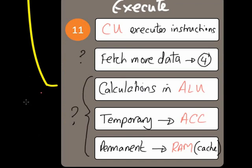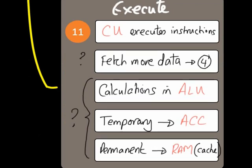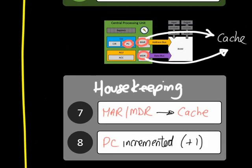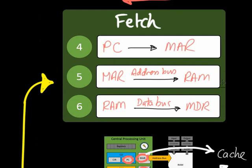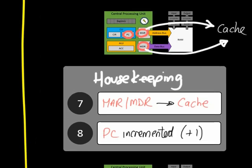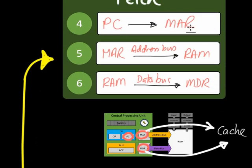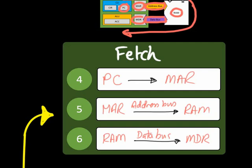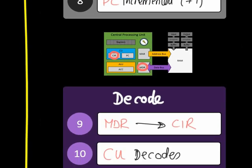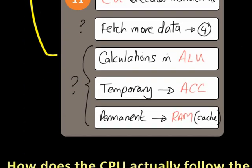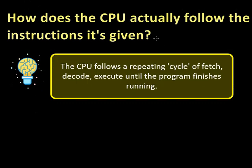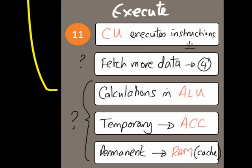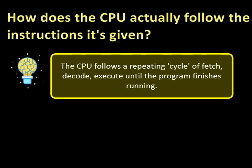When it's done the execute cycle, it goes all the way back up to the fetch cycle. Remember that the program counter was already incremented in the housekeeping section, so it already has the memory location of the next value to be fetched — which is quite clever. Lots of acronyms, abbreviations, and ideas — try your best to go through it a couple of times and write some notes. The CPU follows a repeating cycle — hence the arrow — of fetch, decode, execute, until the program finishes running. One of the instructions executed will eventually be a halt instruction, at which point the fetch decode execute cycle will finish.